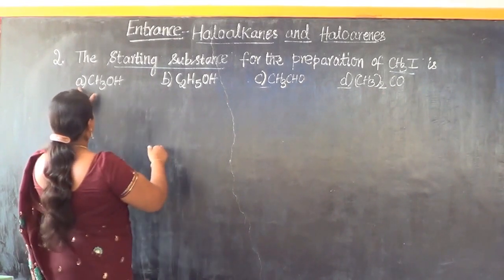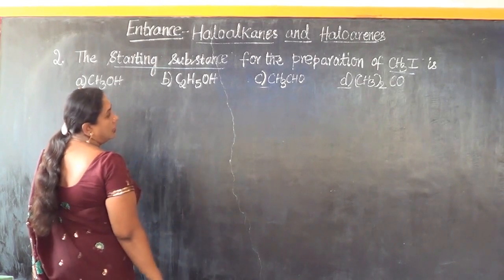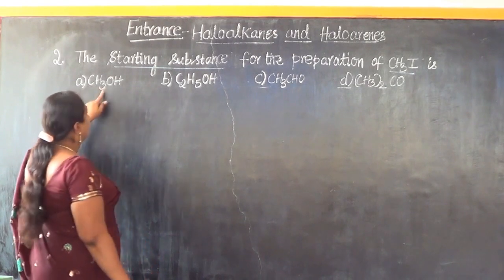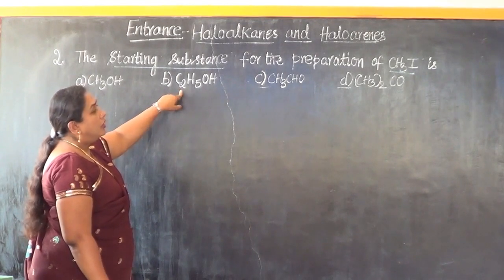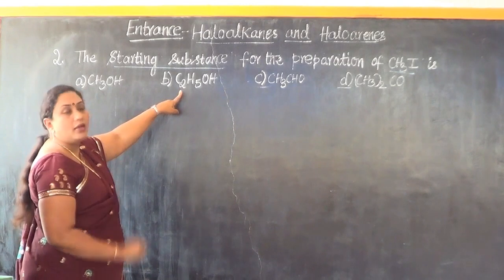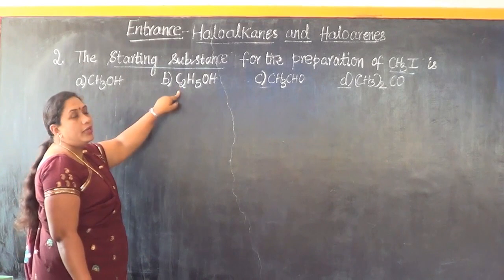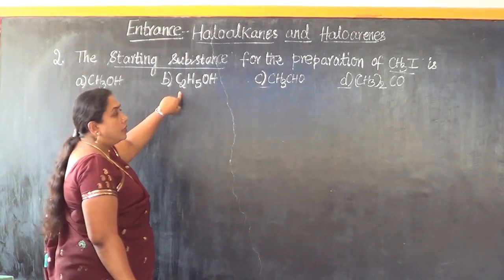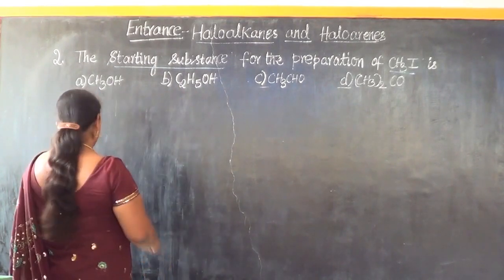We are left with the remaining 50% — is it A or B? Since the question is asking for the product to be iodomethane, our starting material should be methanol. It cannot be ethanol because iodomethane contains one carbon atom, so methane should be the root word. Ethanol has two carbons, so it cannot be the option. Therefore option A is the correct answer.